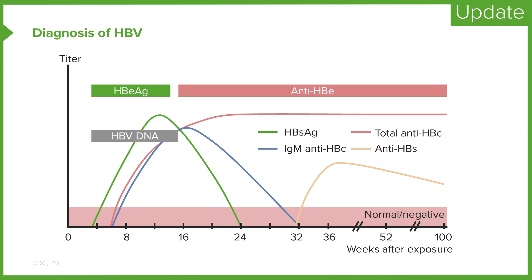The hepatitis B e-antigen (HBeAg) will most likely be positive in patients with acute hepatitis B. When positive, this indicates a greater risk of transmissibility. Anti-HBe represents the antibody against the e-antigen, and when it appears, it indicates low infectivity. Another important antigen is the hepatitis B core antigen (HBcAg), which is not detected in the blood. What we can detect is the antibody against it — anti-HBc — as either IgM or IgG.